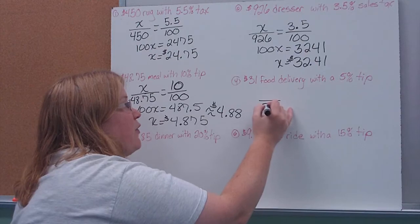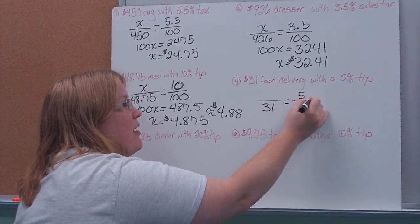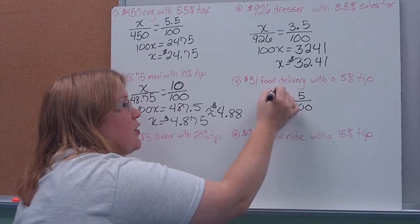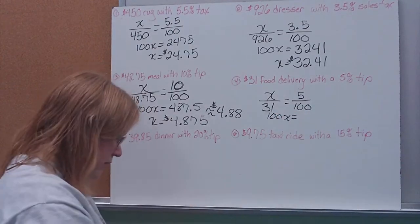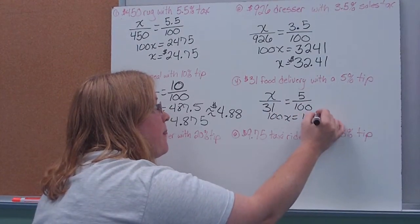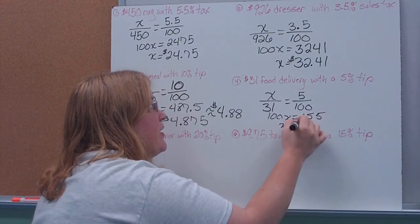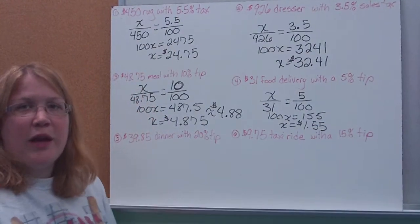Here, $31 food delivery. So that's the price I'm paying. I'm tipping at a rate of 5%. So how much money am I going to be giving them? Cross multiply. So $1.55 is what we'll be tipping there.